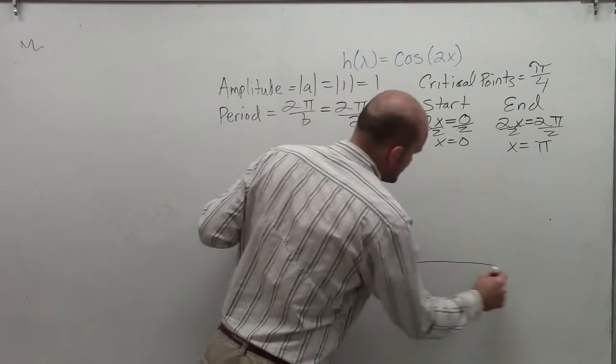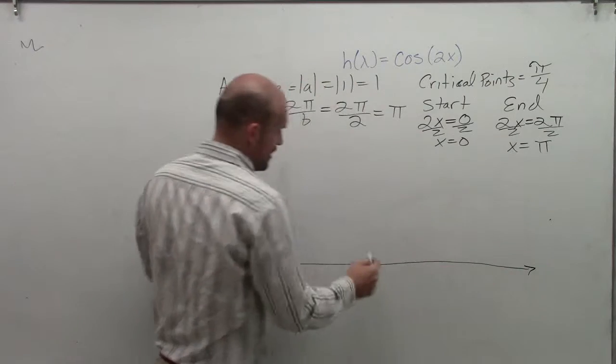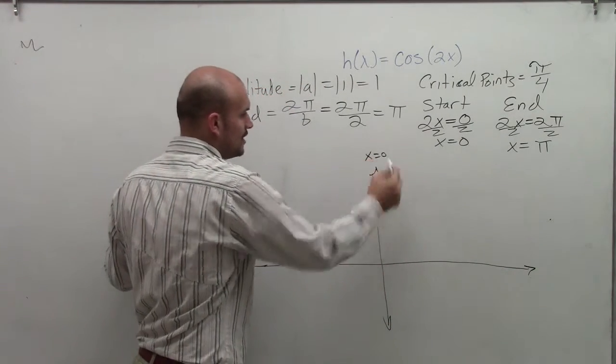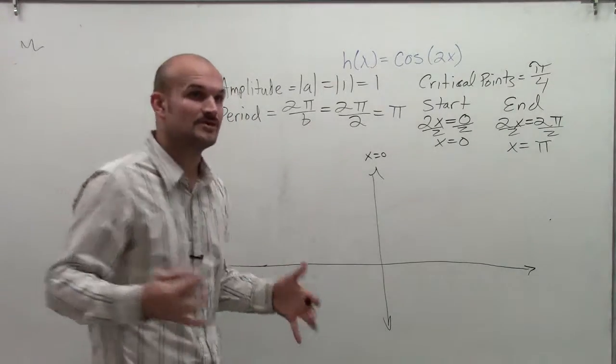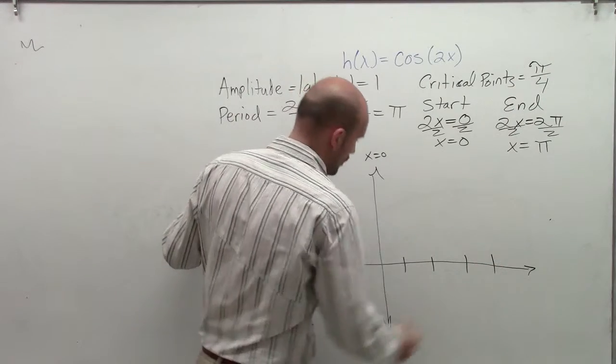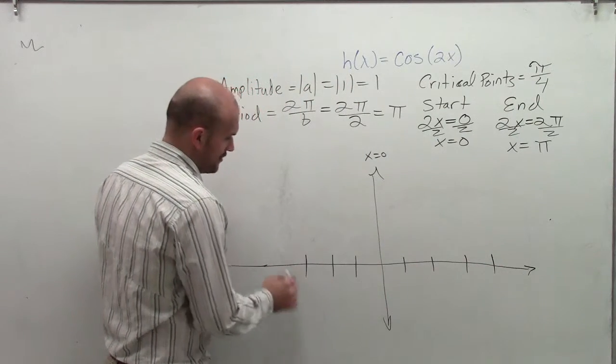When graphing this, I'm going to create my x-axis here and I'm going to have my y-axis at 0, obviously, x equals 0 for your y-axis. We're going to map out our first four critical points, so I have 1, 2, 3, 4, and then we'll go in the negative direction as well: negative 1, 2, 3, 4.